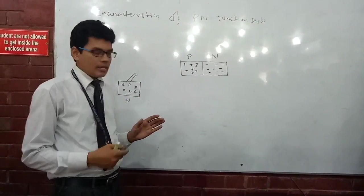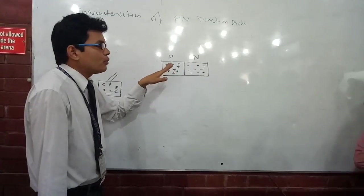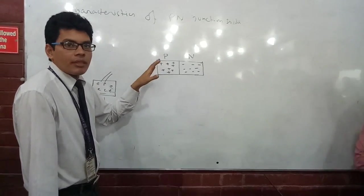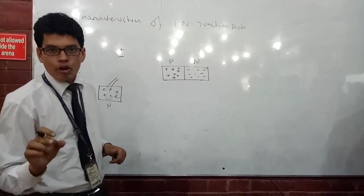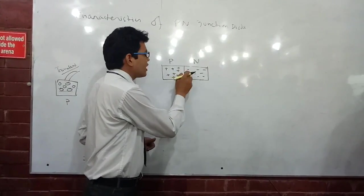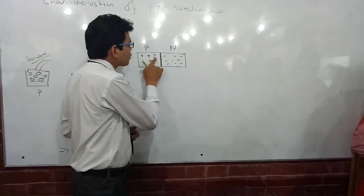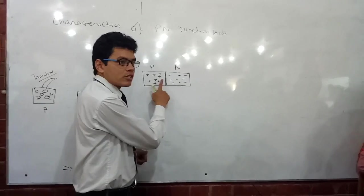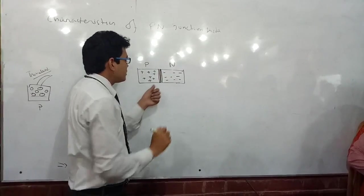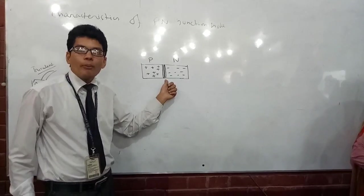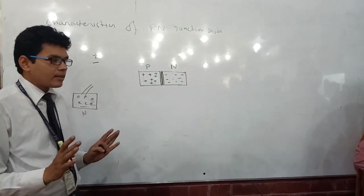We know from the very first class that there are two oppositely charged particles in an atom and they attract each other due to electrostatic law. These are two oppositely charged particles — electrons and holes — so they attract. At the terminal point of the junction, some electrons get diffused with the holes because they attract. Once they combine, they make a neutral area, and the electric field of that neutral area opposes other electrons and holes from combining further.